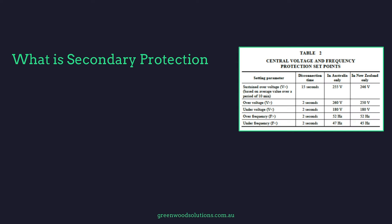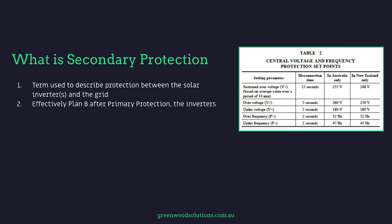What is secondary protection? It's a term used to describe protection between the solar inverters and the grid effectively. So it's plan B after the primary protection of the inverters. It consists of various components inside an enclosure. Things such as over voltage, under voltage, over frequency and under frequency can be set. And it's designed to protect the grid.